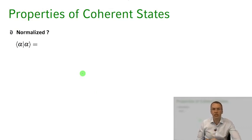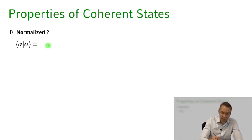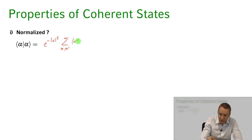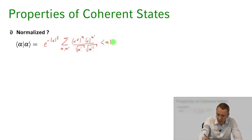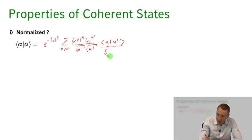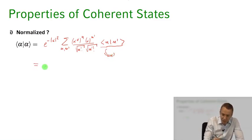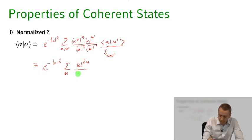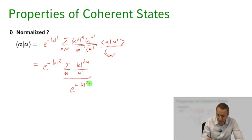Let's check a few properties of coherent states — first, whether they are normalized. Taking the scalar product ⟨α|α⟩ gives e^(−|α|²) times a double sum over n and n′, with factors α*^n · α^(n′) divided by √(n!) · √(n′!), acting on ⟨n|n′⟩. This evaluates to δ(n,n′), so it simplifies to e^(−|α|²) times the sum over n of |α|^(2n)/n!, which is the Taylor expansion of e^(+|α|²). This cancels exactly with the prefactor, giving one. So coherent states are normalized.